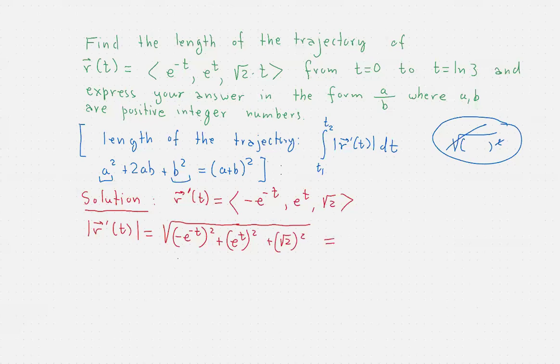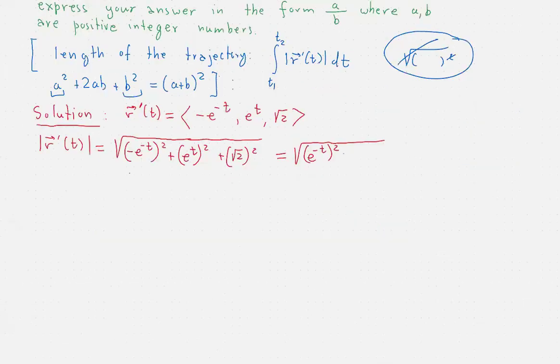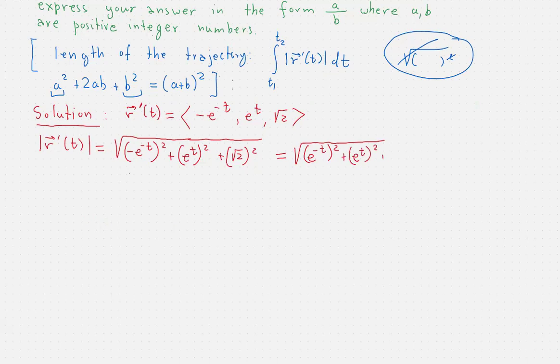So first of all, let's rewrite this as follows. The negative sign in the first parenthesis doesn't really matter because we're inside the square. So that can be written like this. And then we have plus (e^t)². And √2 squared is 2.